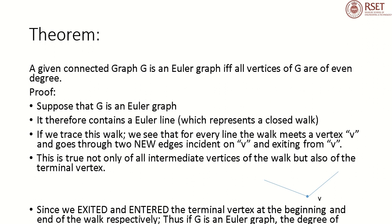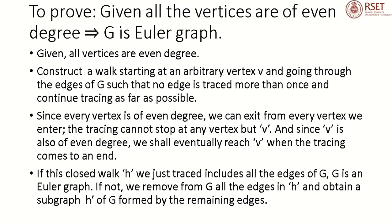This is true not only of all intermediate vertices of the walk but also of the terminal vertex. See the figure: if we are entering into V, we can exit from V since the degree of that vertex is even. Since we exited and entered the terminal vertex at the beginning and end of the walk respectively, thus if G is an Euler Graph, the degree of each vertex is even.